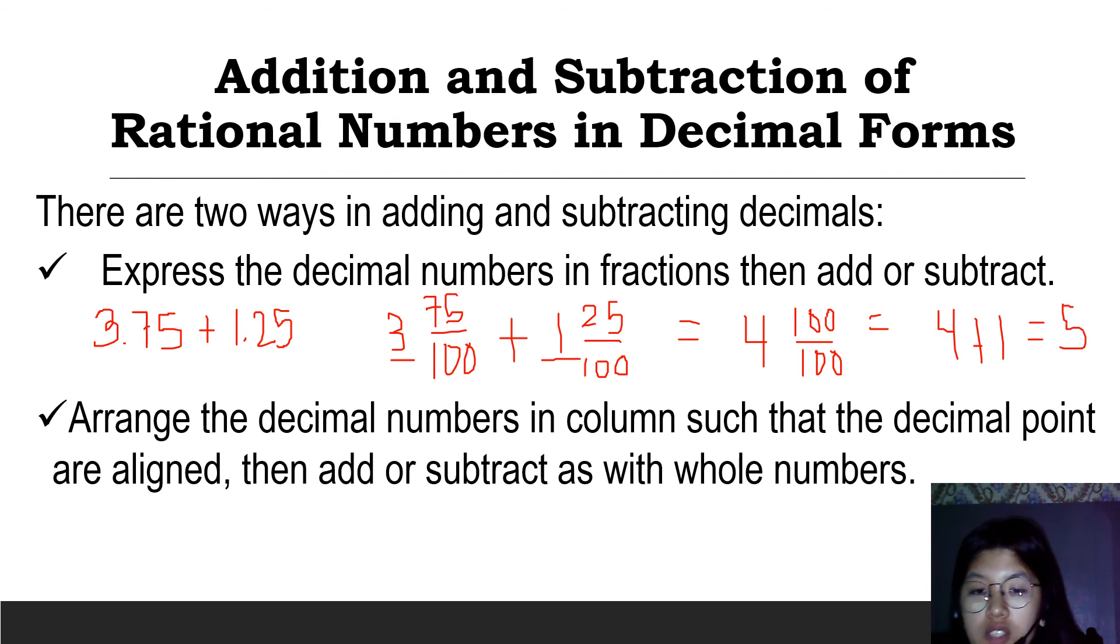Next, arrange the decimal numbers in column such that the decimal points are aligned, then add or subtract as with whole numbers. Same example, we have 3.75 plus 1.25. We align the decimal points and then we can add them. 5 plus 5 is 0, carry 1. 1 plus 7 is 8, plus 2 is 10, carry 1. 1 plus 3 is 4, plus 1 is 5. And the decimal point. We have 5.00 or equal to 5. Same result whether you convert decimals to fractions and add them, or arrange the decimal numbers in column.